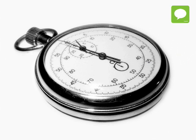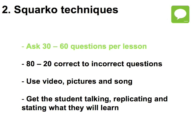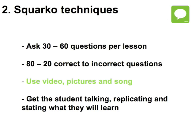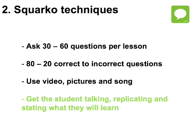What were some of the goals associated with these actions? Aim to ask 30 to 60 questions a lesson. Try to get the fine balance of the student getting 80% of questions correct. Use video, pictures, and song. Get the student replicating and stating what will be learnt before you start.